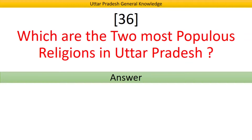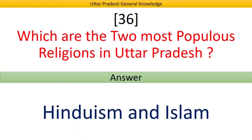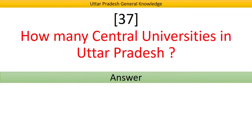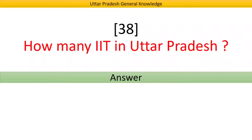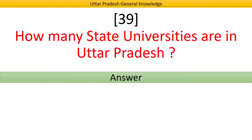Which are the two most populous religions in Uttar Pradesh? Answer: Hinduism and Islam. How many central universities are in Uttar Pradesh? Answer: Six. How many IITs are in Uttar Pradesh? Answer: Two. How many state universities are in Uttar Pradesh? Answer: 31.